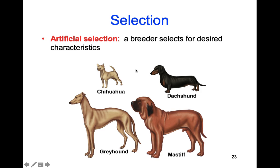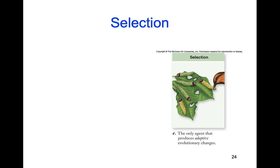That's artificial selection — how we've gotten all these different breeds of dogs, cattle, and chickens. If you ever go to the fair and look at all the different types of chickens, there's a ton of them. That's all because people picked and chose what characteristics they wanted.